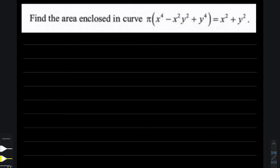The curve given is not a familiar one — it's not something we can easily relate to, so sketching it is going to be a tough ask. A careful observation shows that the terms on the left side are homogeneous of degree four, and the terms on the right side are also homogeneous of degree two. For such questions, we prefer using polar coordinates.